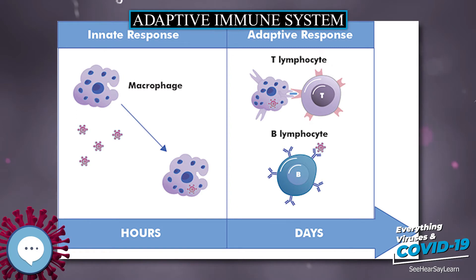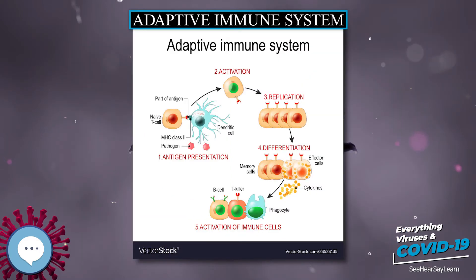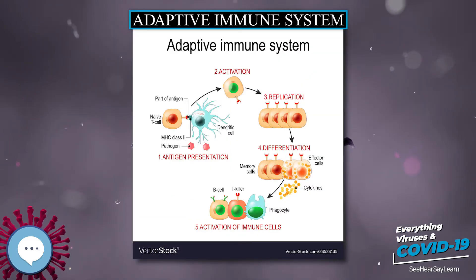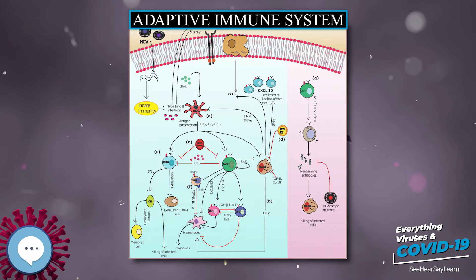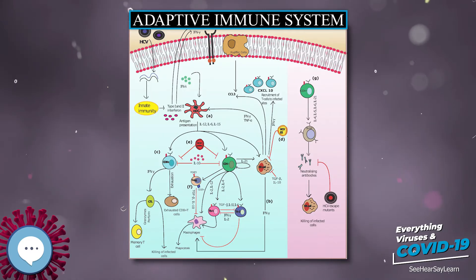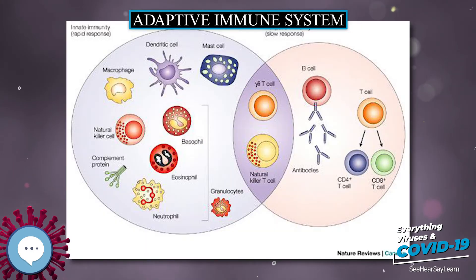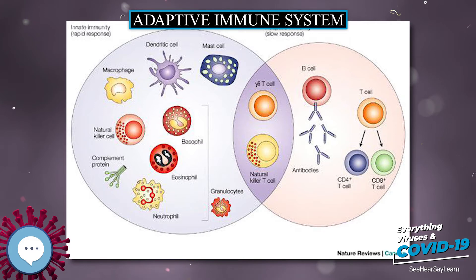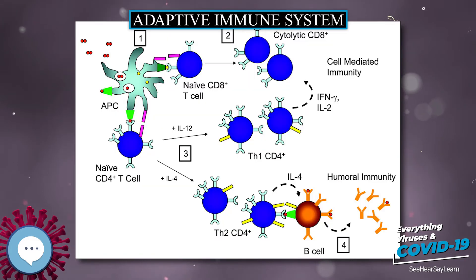The acquired immune system is one of the two main immunity strategies found in vertebrates, the other being the innate immune system. Acquired immunity creates immunological memory after an initial response to a specific pathogen, and leads to an enhanced response to subsequent encounters with that pathogen. This process of acquired immunity is the basis of vaccination.